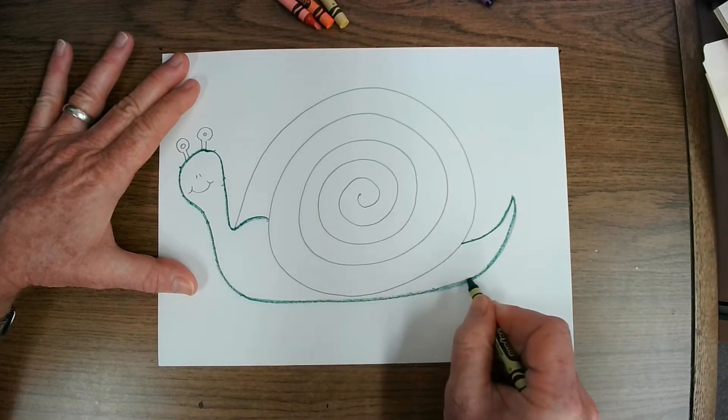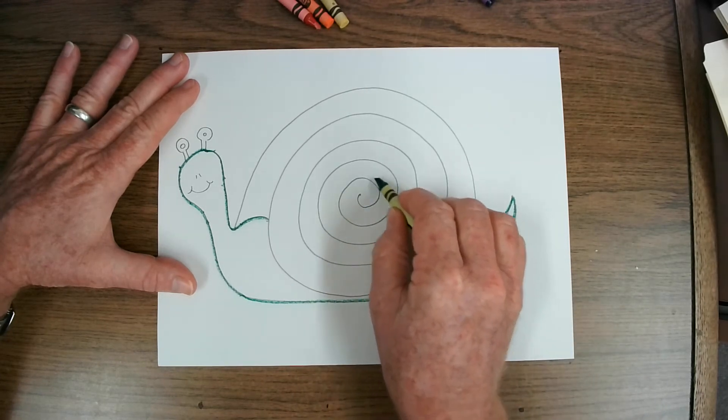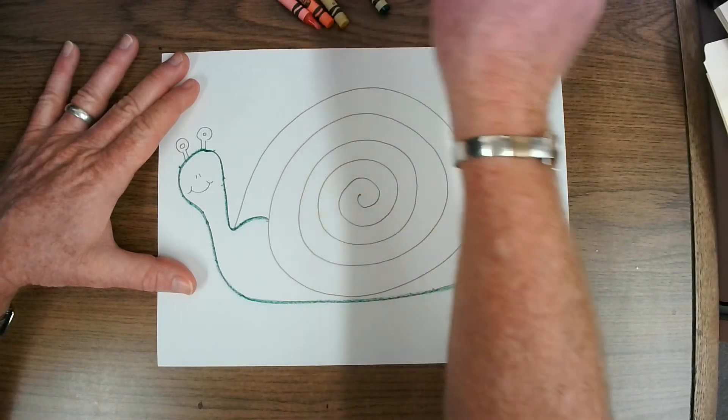So I'm going to trace over the body for the snail. And I can use a different color to trace over the lines for the shell. We'll do that next.